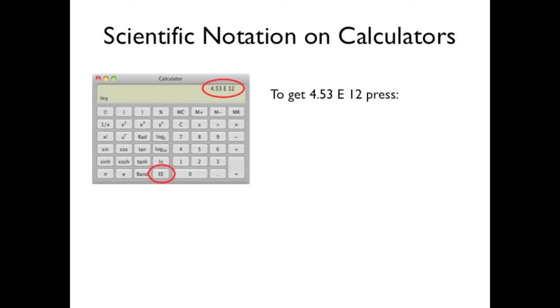To enter 4.53 times 10 to the 12th on this calculator, you would press 4.53ee12. You know you are successful when the calculator displays the number with the shorthand E.